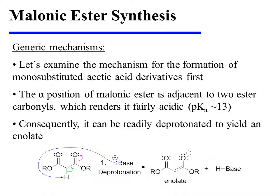Let's examine the mechanism for the formation of mono-substituted acetic acid derivatives first. The alpha position of malonic ester is adjacent to two ester carbonyls, which renders it fairly acidic — it has a pKa value of about 13. Consequently, it can be readily deprotonated to yield an enolate.